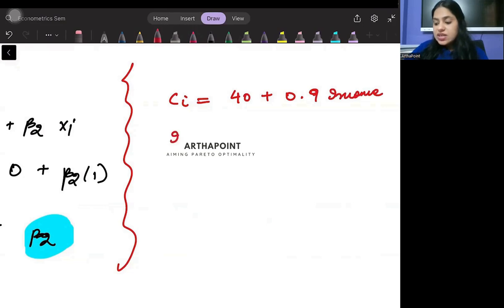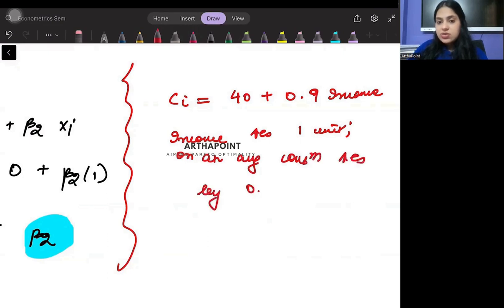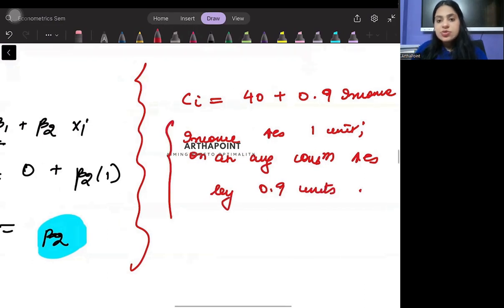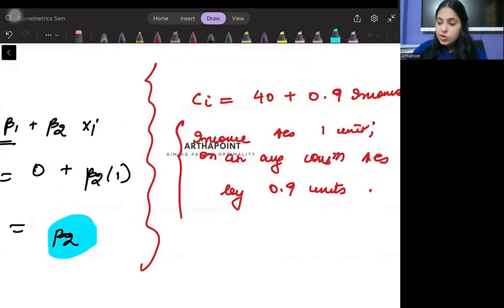So we can go ahead and say that when income increases by one unit, then on an average consumption increases by 0.9 units. On an average consumption increases by 0.9 units.